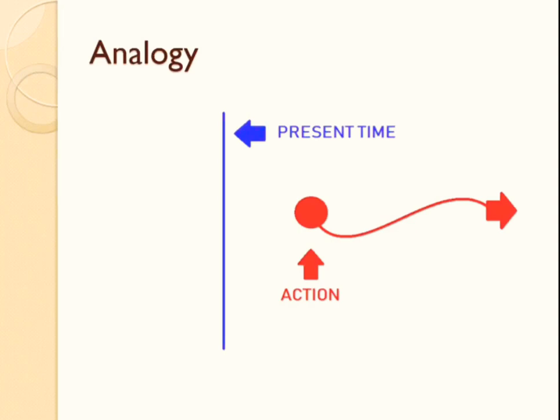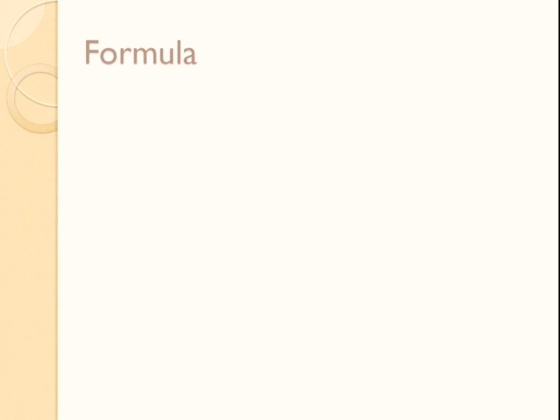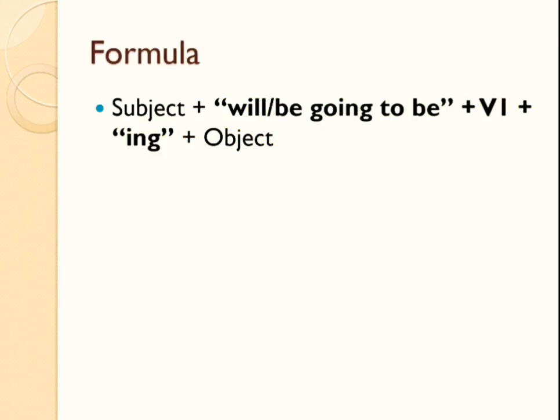You might be wondering, Professor, how do I use the future continuous tense? Is there a formula for the sentences? Yes, my dear friend, there is a formula. What is the basic sentence structure in English? It is S plus V plus O — subject, verb, and object. But here in the future continuous tense, the formula will be: Subject plus will or be going to plus be form plus the base verb plus -ing plus object.